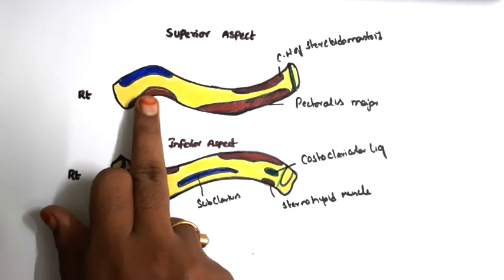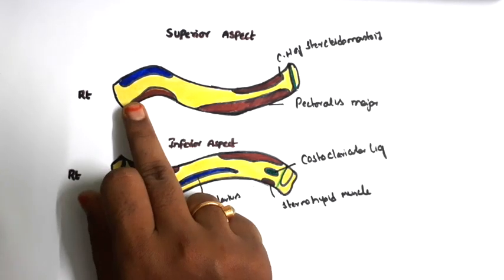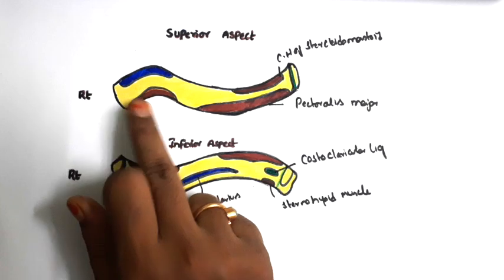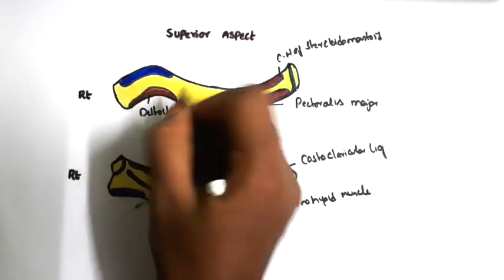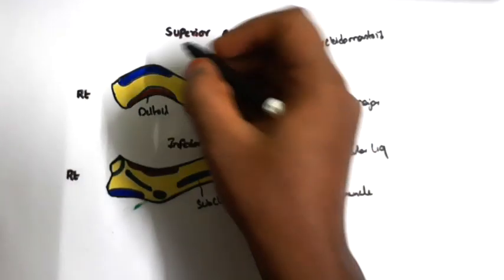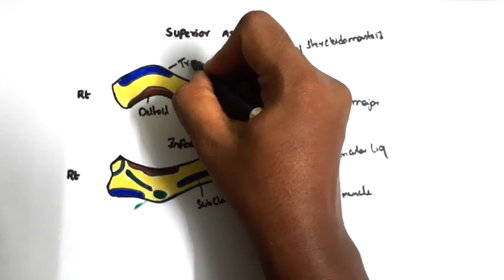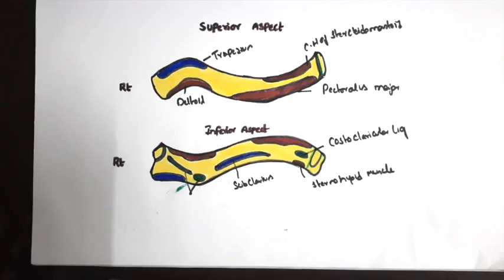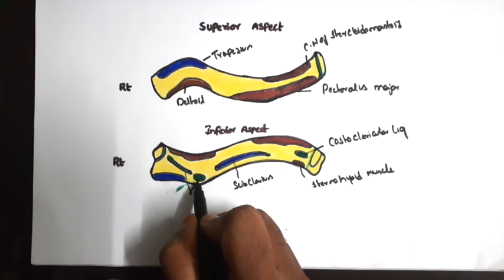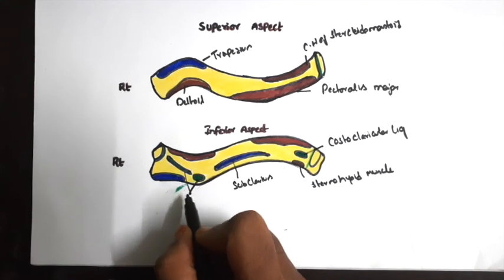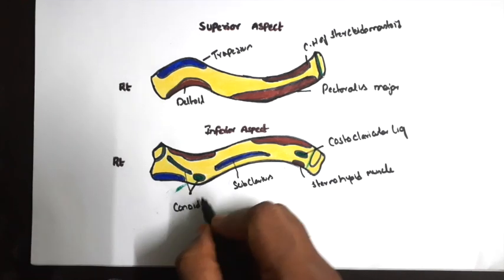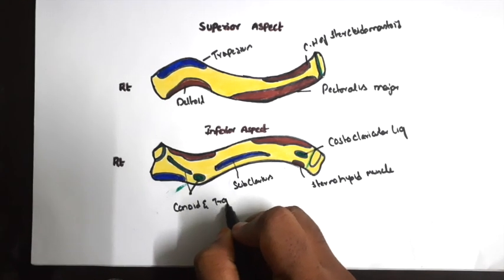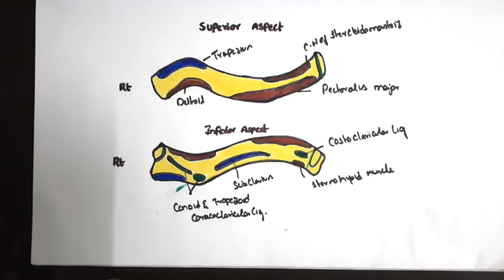Now we will see the muscular attachments on the lateral one-third of the clavicle. On the anterior border it gives origin for the deltoid muscle. On the posterior border it gives insertion of the trapezius muscle. On the inferior surface, the conoid tubercle and the trapezoid ridge give attachments to the conoid and trapezoid parts of the coracoclavicular ligament.